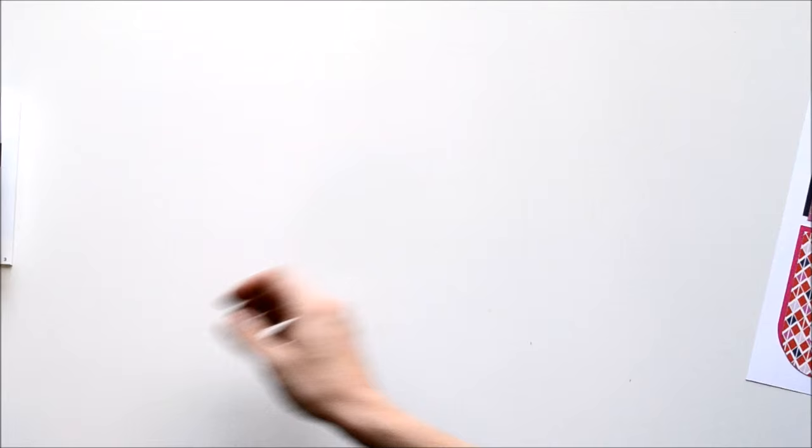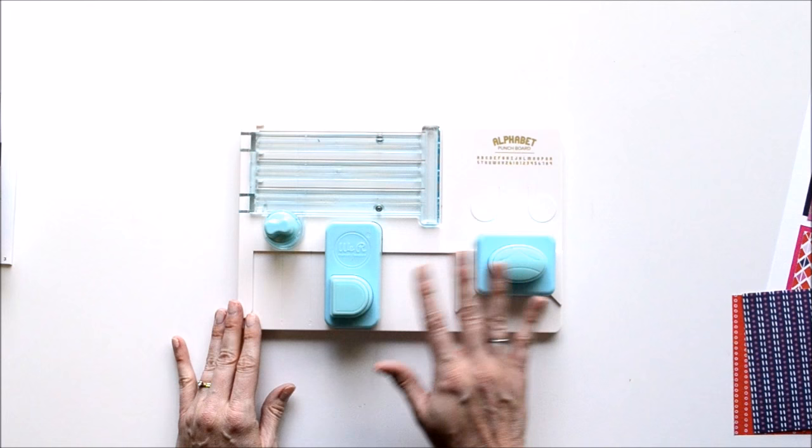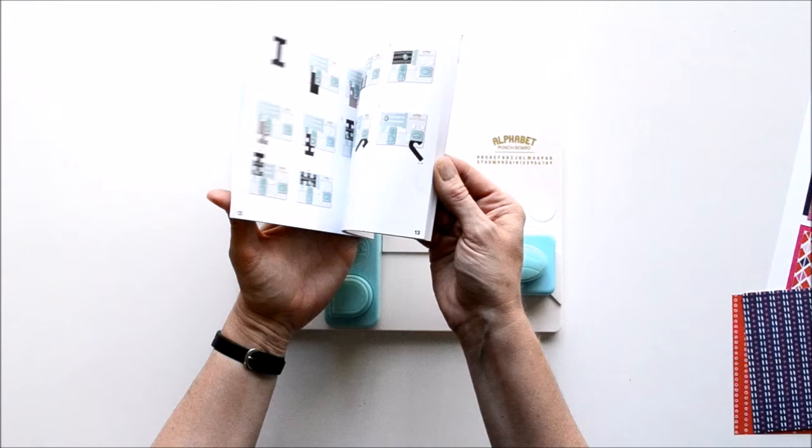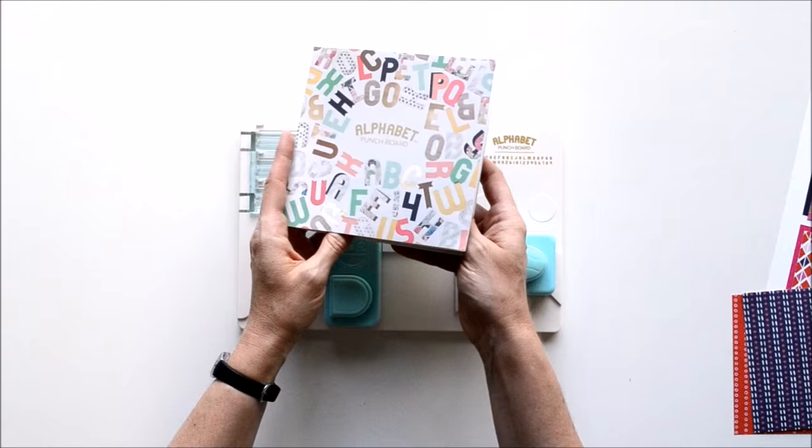Let me just give you a little tour of this tool. It's just like a lot of the punch boards - it's got a cutting feature here with the blade and then it's got a couple of punch features, and then it comes with this instruction booklet which shows you how to make all the letters of the alphabet plus numbers and a couple of punctuation marks.